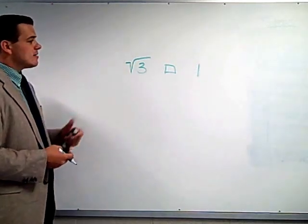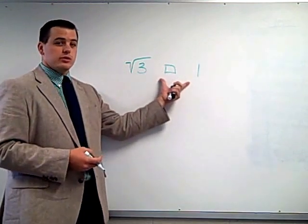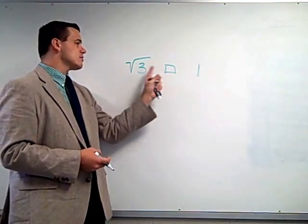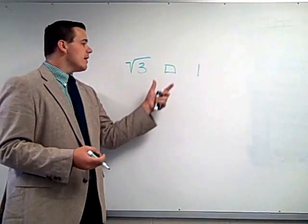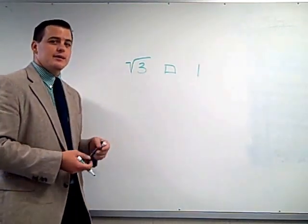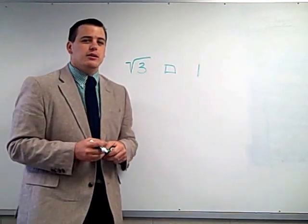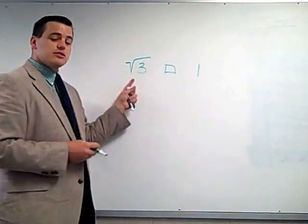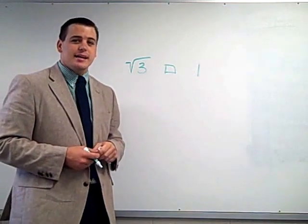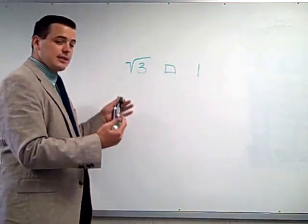Right now we're comparing apples to oranges — these are two different forms, so we really can't say this is greater than or equal to that. We want to get it down to apples to apples, oranges to oranges. So we're going to convert the square root of 3 and approximate it as a decimal. This was covered in the previous lesson.